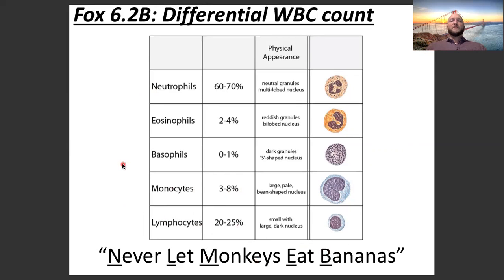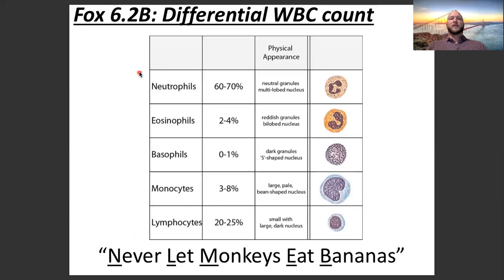White blood cells have different jobs. Neutrophils are fast responders to bacterial infections. If a patient comes in and 75-80% of their white blood cells are neutrophils and they have 15,000 white blood cells per microliter, you might think this patient has a bacterial infection. That's an example of how knowing the white cell differential can help you figure out what's going on with a patient and how to help them.